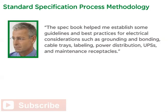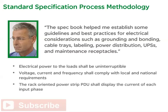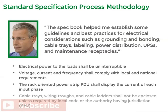The spec book helped establish guidelines and best practices for electrical considerations such as grounding and bonding, cable trays, labeling, power distribution, UPSs, and maintenance receptacles. Examples of specifications followed include: electrical power to the loads shall be uninterruptible; voltage, current, and frequency shall comply with local and national requirements; the rack-oriented power strip PDU shall display the current of each input phase; and cable trays, wiring troughs, and cable ladders shall not be enclosed unless required by local code or the authority having jurisdiction. Next, Kelly and Crawford needed to address the cooling needs in their wiring closets.